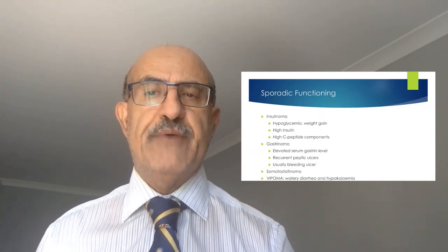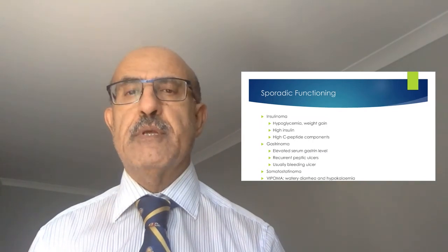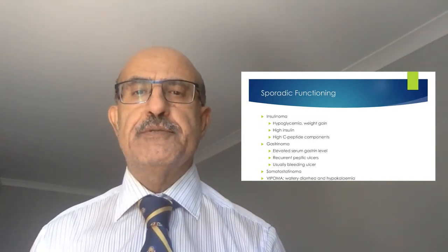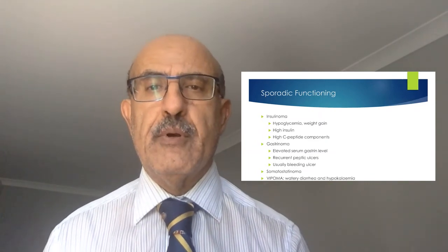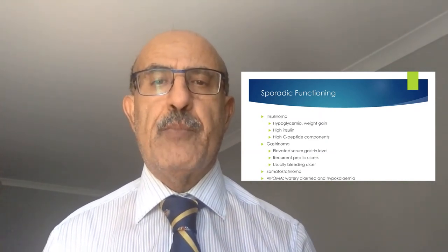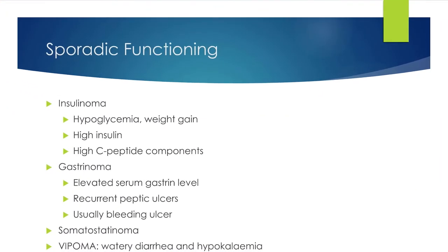Functioning tumors are divided into sporadic and familial types. Sporadic tumors occur haphazardly with no family history of neuroendocrine neoplasia. Insulinoma manifests as hypoglycemia with weight gain — patients can collapse and become unconscious while playing golf or at work. They are characterized by low blood glucose, high insulin levels, and symptoms immediately relieved by taking oral sugar.